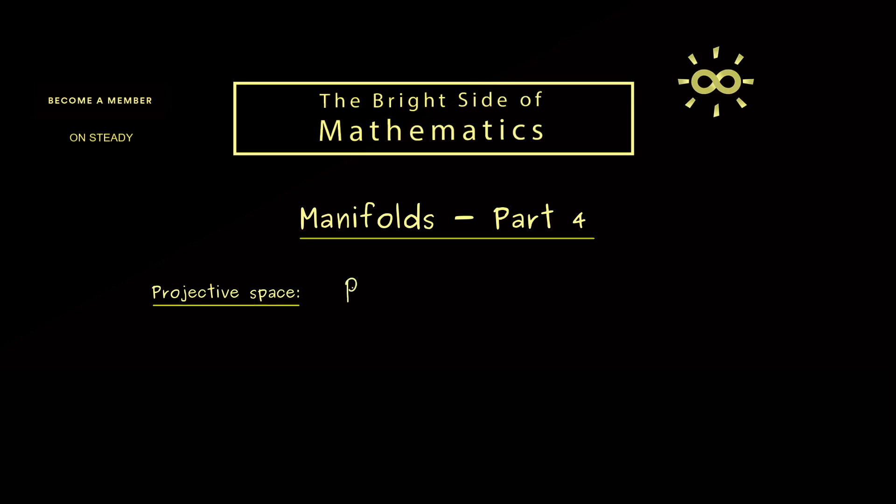And the notation I use for this is P^n(R). It stands for the set of one-dimensional subspaces of R^(n+1). Therefore roughly speaking we put lines into a set. So maybe we should visualize this in the case n is equal to 1.